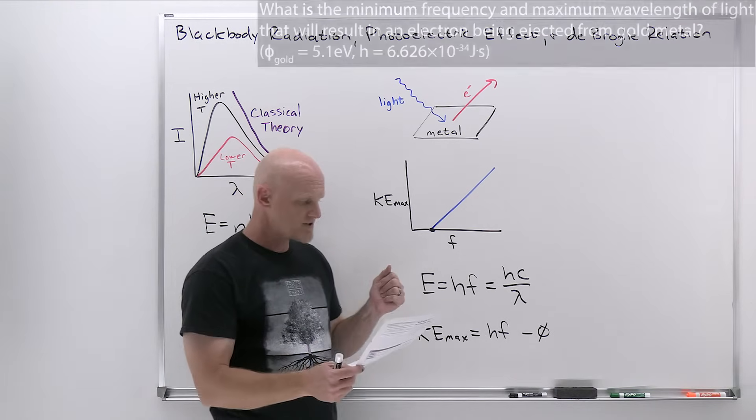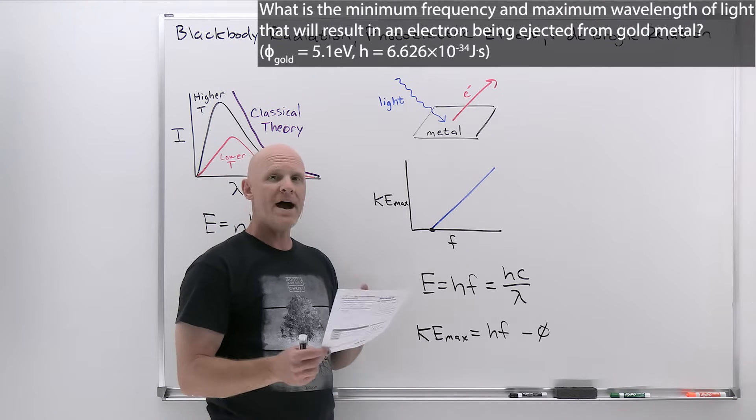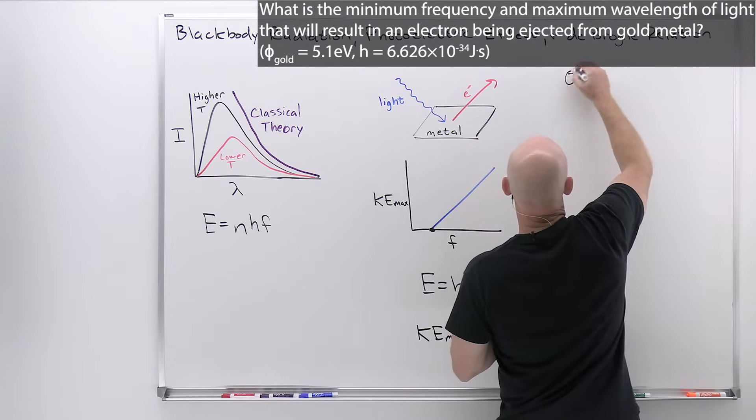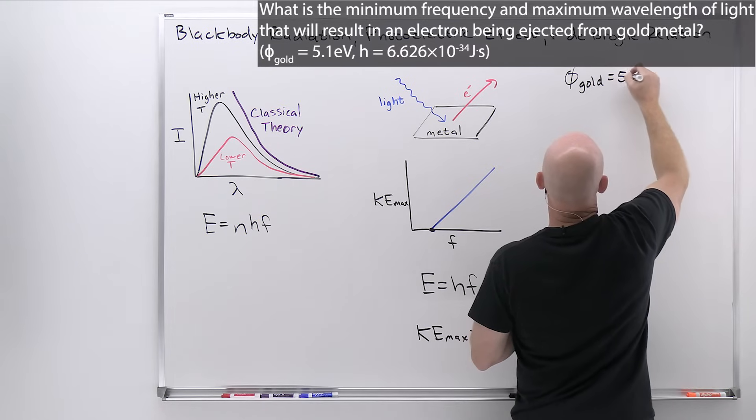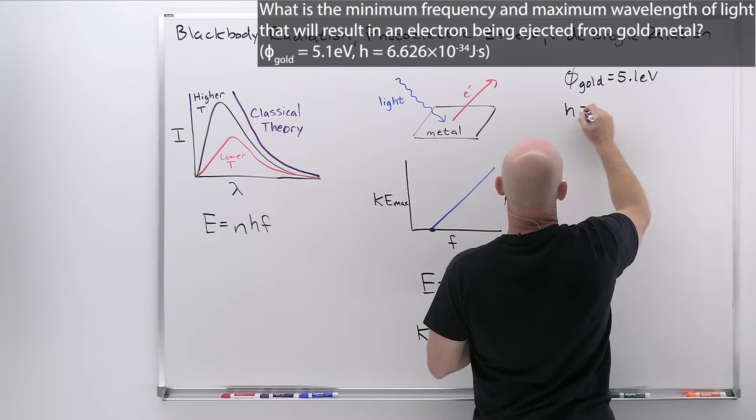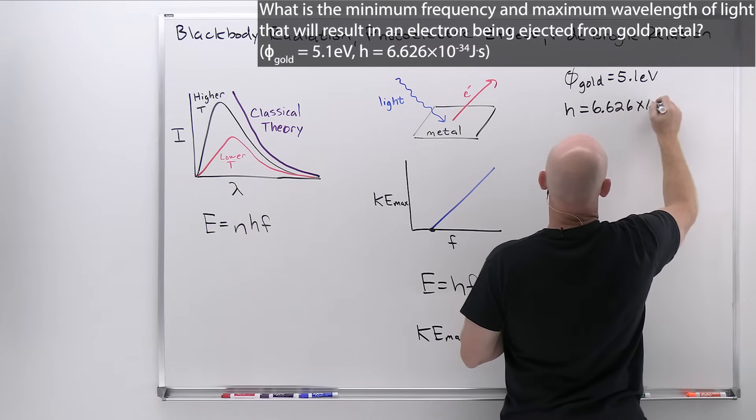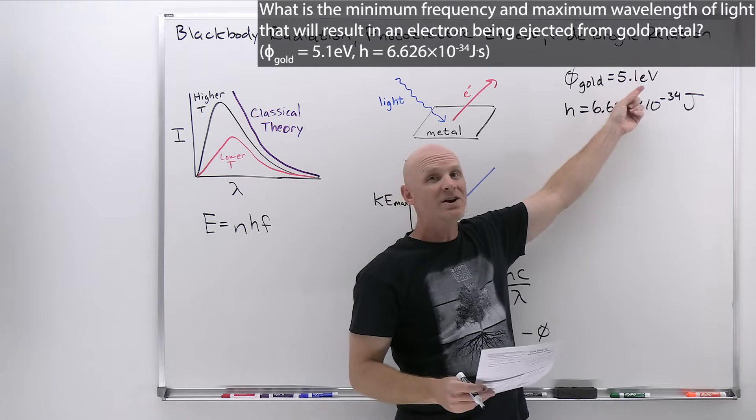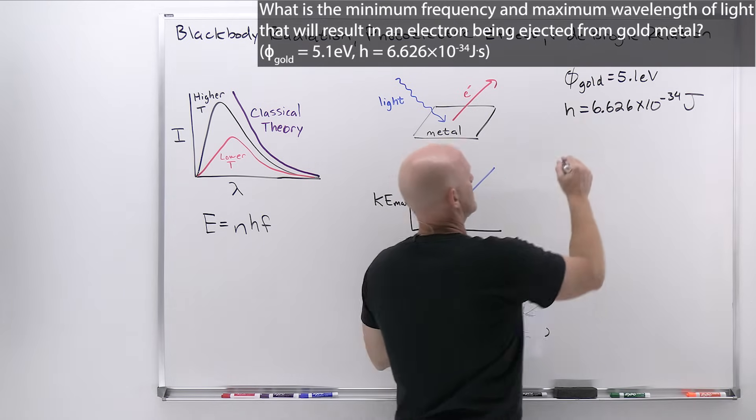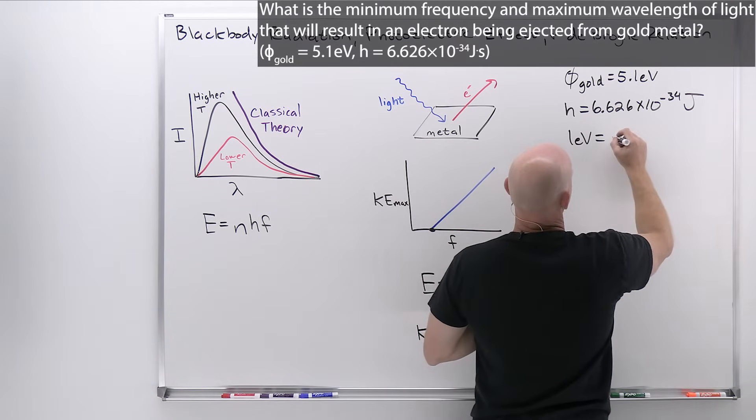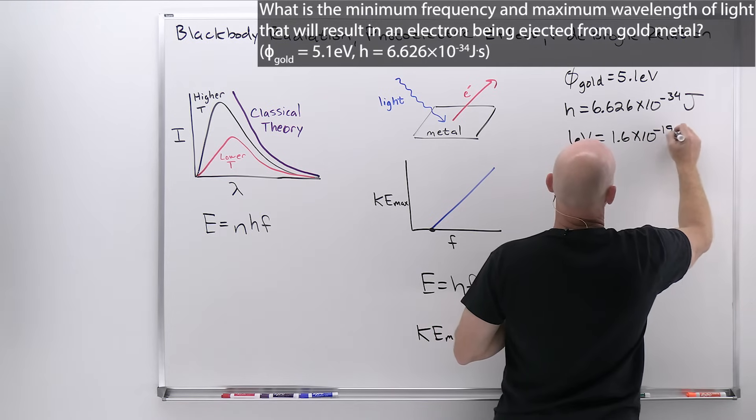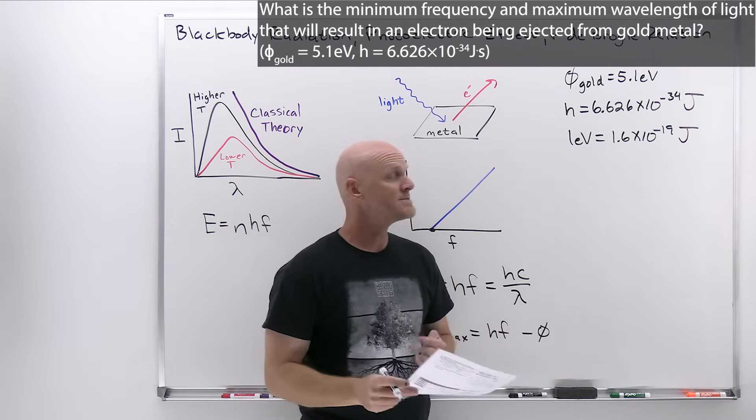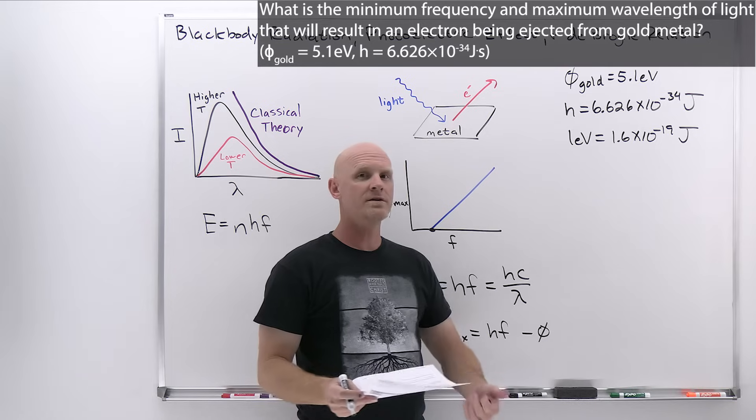So let's take a look at an example problem. The question here says, what is the minimum frequency and maximum wavelength of light that will result in an electron being ejected from gold, and we're given the work function for gold as 5.1 electron volts. We're given Planck's constant as 6.626 times 10 to the negative 34 joule seconds. You might recall that electron volts is just another measure of energy. You can convert back and forth between joules and electron volts.